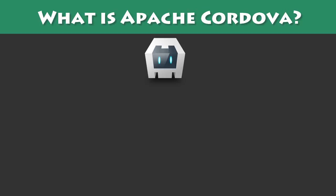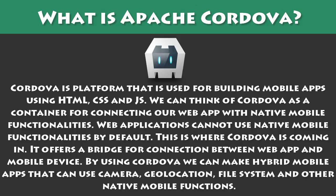What is Apache Cordova? Cordova is a platform that is used for building mobile apps using HTML, CSS and JavaScript. We can think of Cordova as a container for connecting our web app with native mobile functionalities. Web applications cannot use native mobile functionalities by default. This is where Cordova comes in — it offers a bridge for a connection between web app and mobile device.